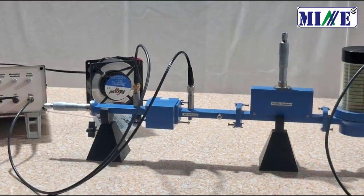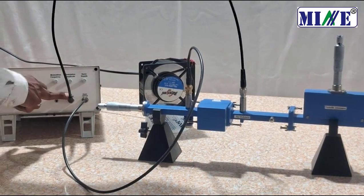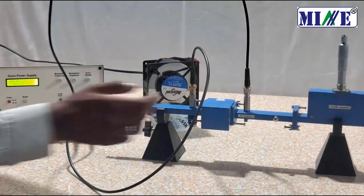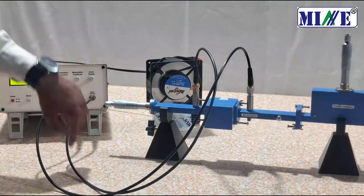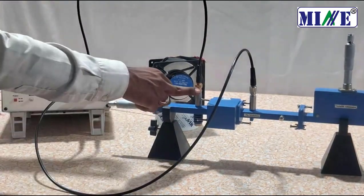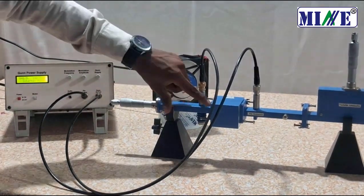Connect the pin output to the pin modulator with a TNC to TNC cable, and connect the gun output pin to the gun diode pin with a BNC to BNC cable. Set the fan in front of the gun diode.